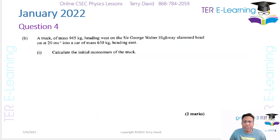Next part: a truck of mass 945 kg is heading west along the highway and slammed head-on into a car traveling east at 20 meters per second. We need to draw a simple diagram to understand what's happening. West is this way, east is this way. The truck is traveling west.